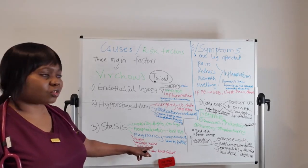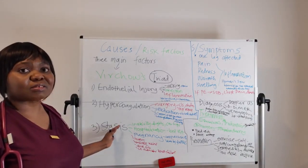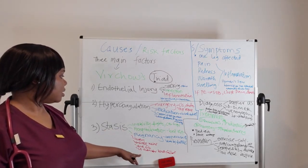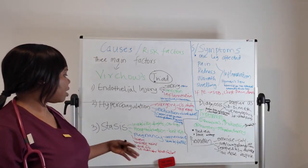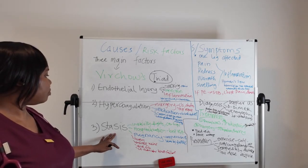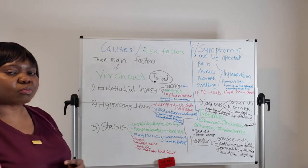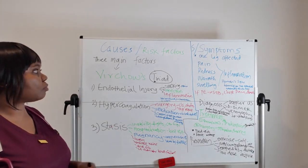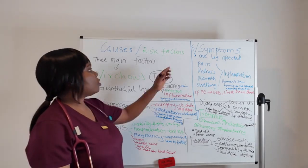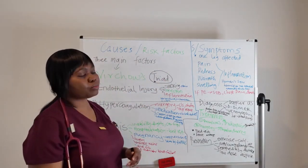In atrial fibrillation and left ventricular heart failure, blood can move very slowly, leading to stasis and potential clot formation. Now let's look at the signs and symptoms of deep vein thrombosis.